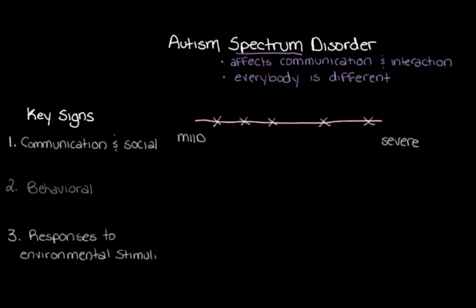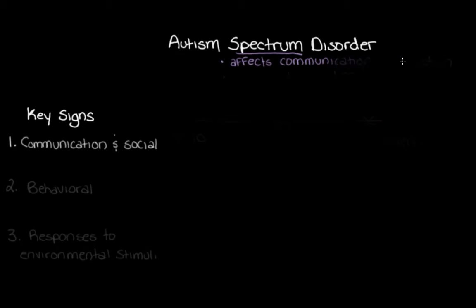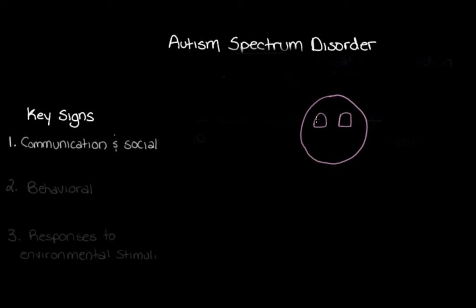Starting with communication and social signs — I'm going to draw a face here with an expression that's supposed to look like boredom. For someone with Autism Spectrum Disorder, they might not really notice or pick up on this facial expression and realize the person is trying to indicate they're bored. They might have trouble noticing these sorts of nonverbal cues that are often used when people chat, and might continue a conversation without picking up on this boredom.